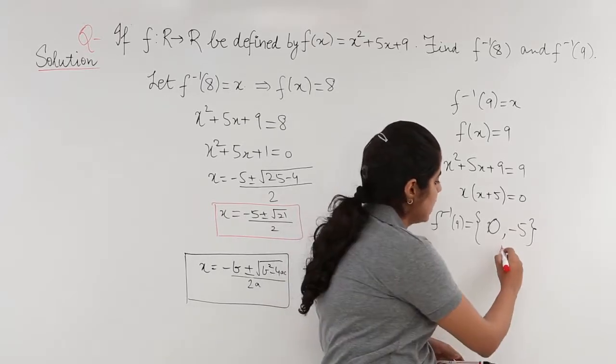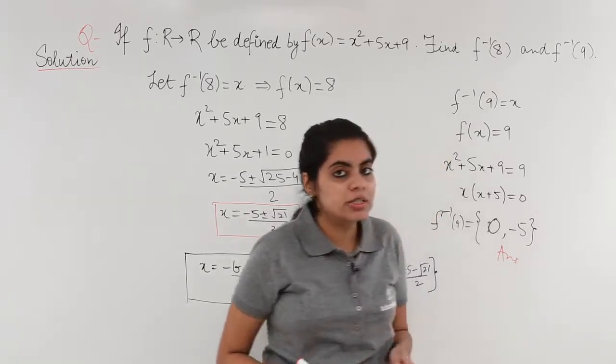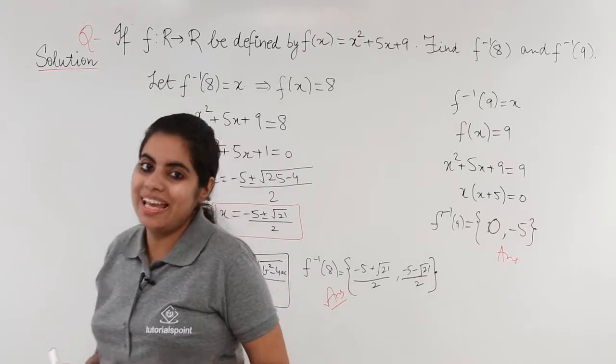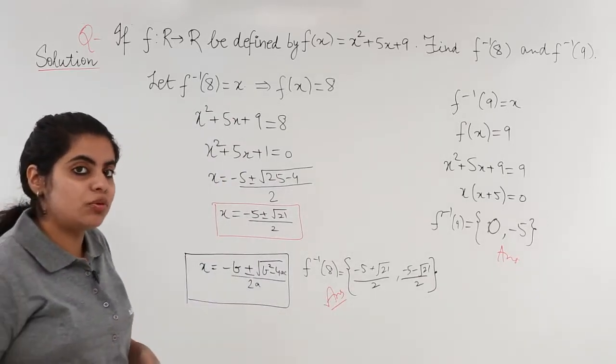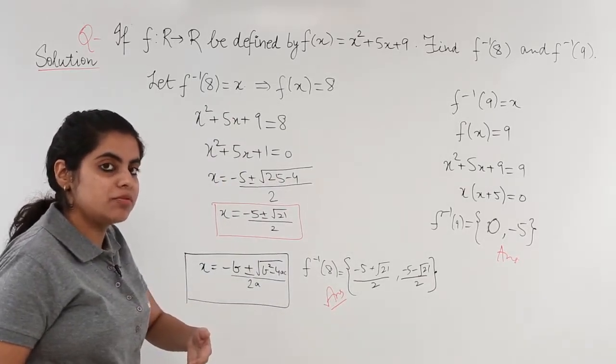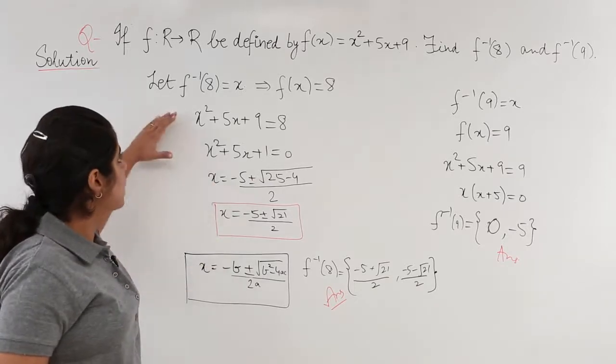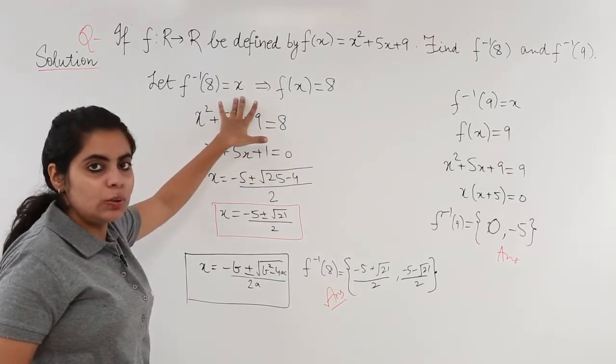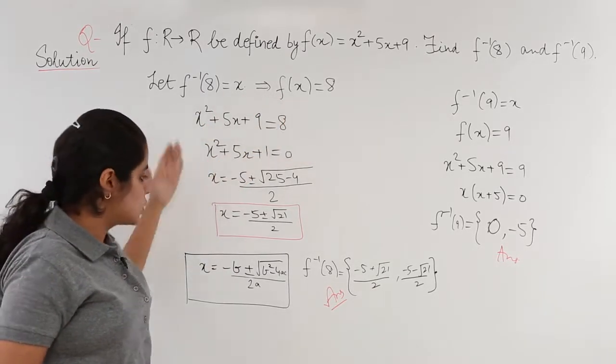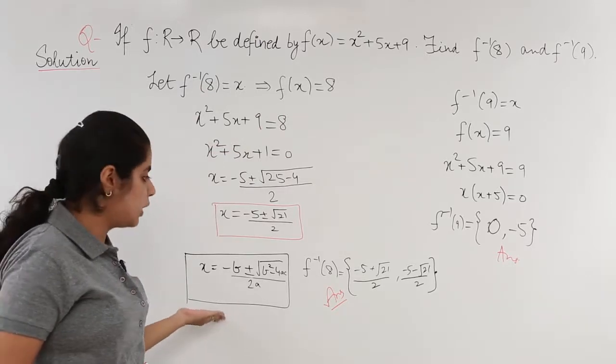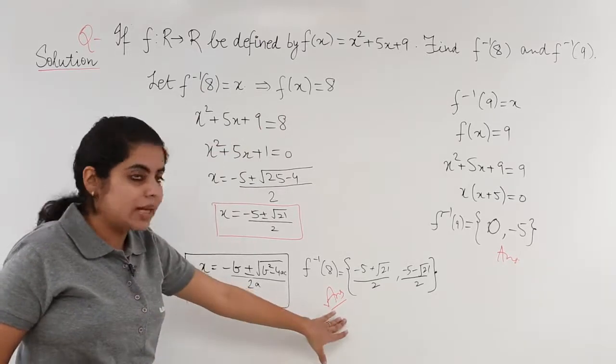So we can see two answers that we have obtained. The first was finding f⁻¹(8). What was the technique to follow for f⁻¹(8) and f⁻¹(9)? They were the same. First we assumed it equal to x then f(x) equals 8. Solve the quadratic with the help of the quadratic formula. Obtained two roots.